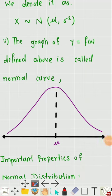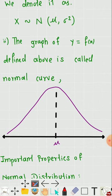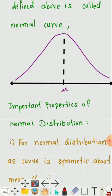The graph of the normal distribution, or its density function y = f(x), is called the normal curve. The graph is symmetric and is called a bell-shaped symmetric curve. By symmetric, it means that when we fold the figure along the line passing through x = μ, the two halves would coincide.